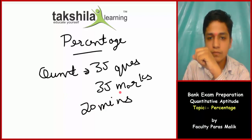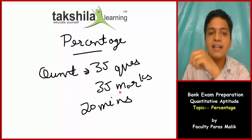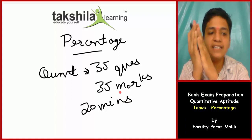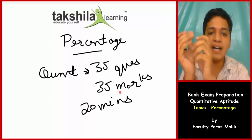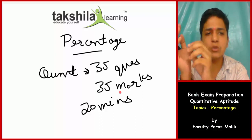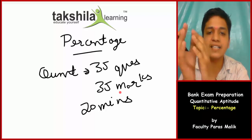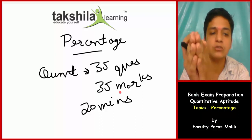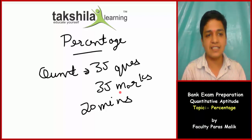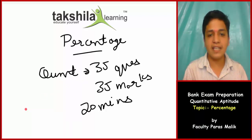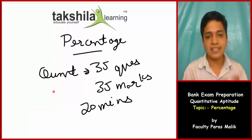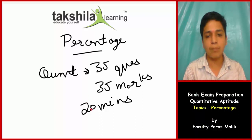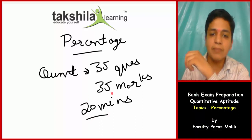Earlier, in the previous pattern, there was a one-hour time slot for quant. Now, with the new pattern, sectional timings have been introduced in the preliminary exam, whether it is clerk level or P.O. level. So, there are 20 minutes and you will attempt 35 questions.